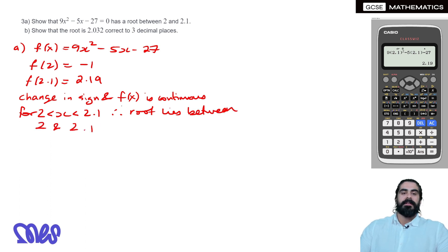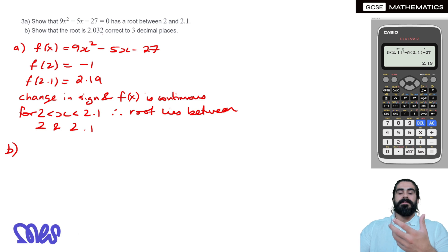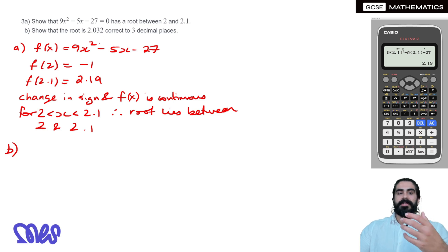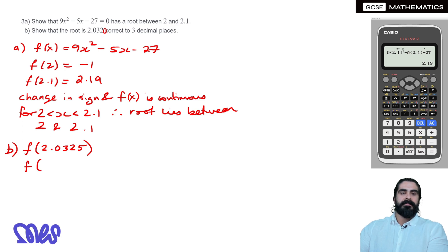It's very important you state both change of sign and that f(x) is continuous. The next part says show that the root of 2.032 is correct to three decimal places. To show a root is correct to 3dp, we need to show that the upper bound and lower bound — all numbers that round to 2.032 — produce a change of sign. The upper bound is 2.0325 and the lower bound is 2.0315.